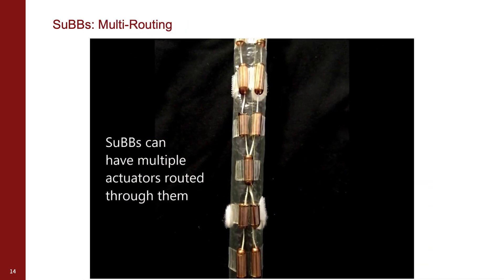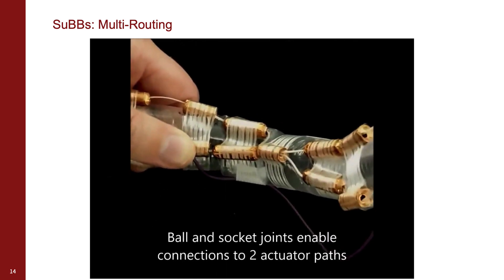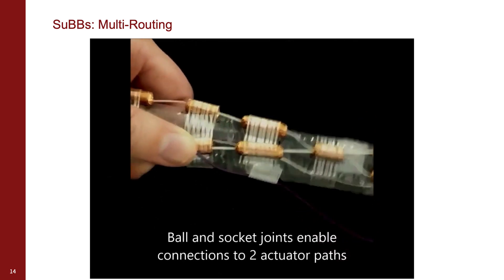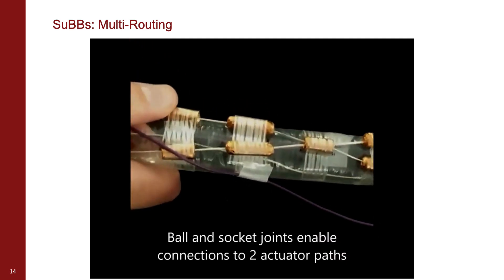The ball and socket conductor pieces also allow for the reuse of subs in multiple antenna paths. Multiple tendons can be routed through the same conductor piece, with each tendon connecting a different path on the soft robot body.